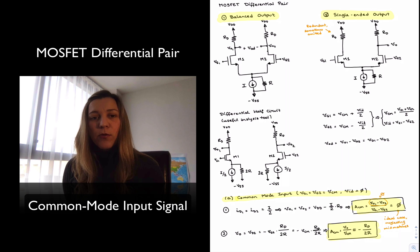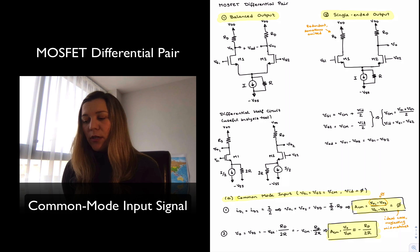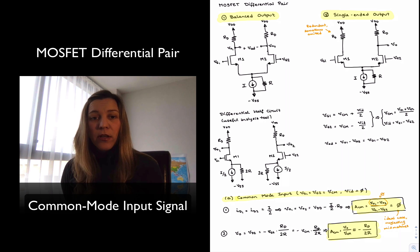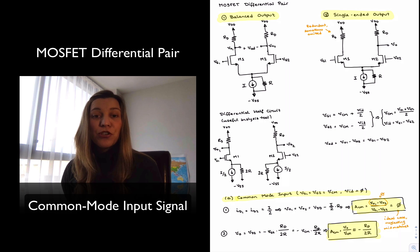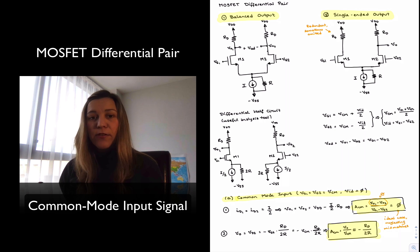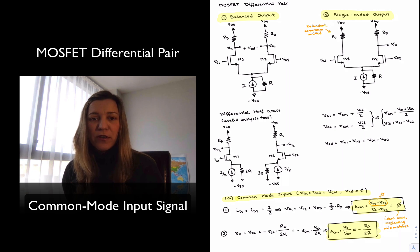Next, we're going to take a look at the operation of the circuit in the case where we apply a differential signal — meaning the signal is different between the two inputs, VG1 and VG2.